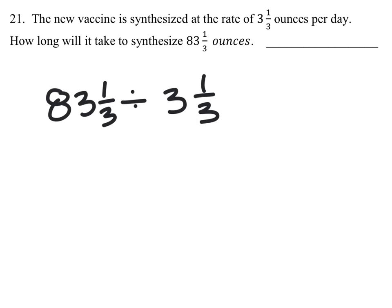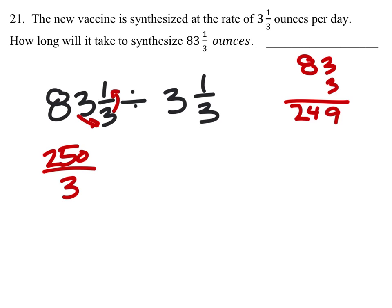I need these as improper fractions, by the way. So 83 times 3, that's not really a small number. So 9 and 24. 249 plus the 1. So I have 250 over 3. And this is divided by 3 times 3 is 9, plus 1. That's 10 thirds.